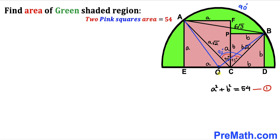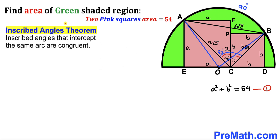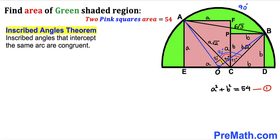I've connected center O with points A and B. Recalling the inscribed angle theorem — inscribed angles intercepting the same arc are congruent — angle AOB and angle ACB both intercept arc AB, which measures 90 degrees. Therefore, angle AOB is 90 degrees as well.